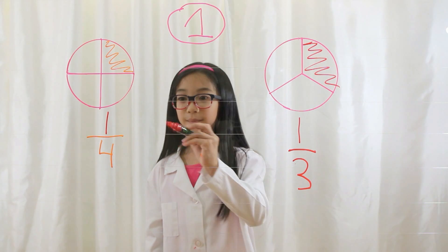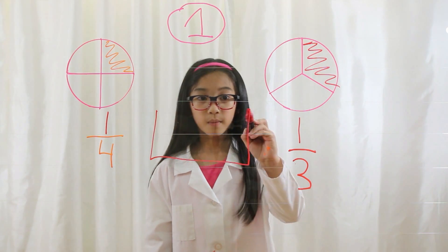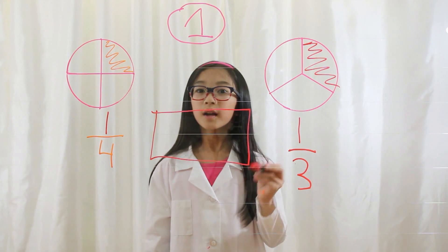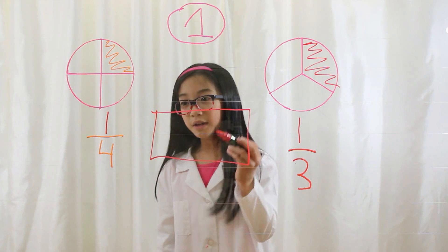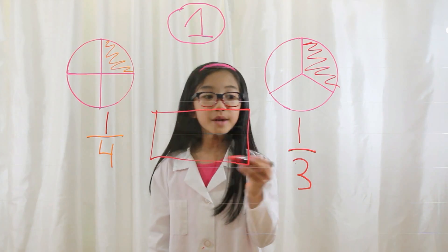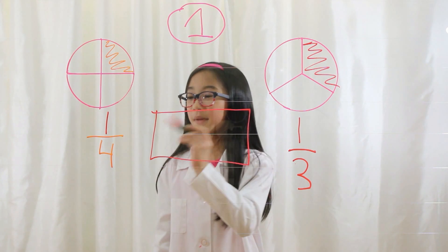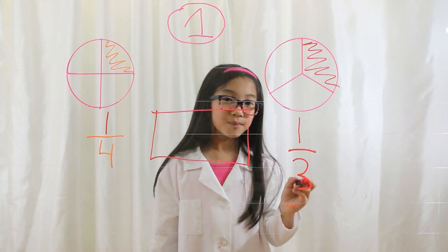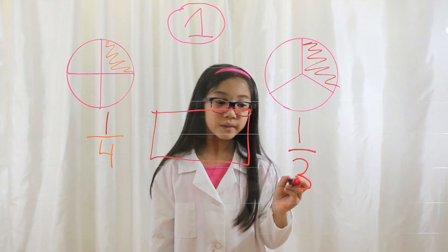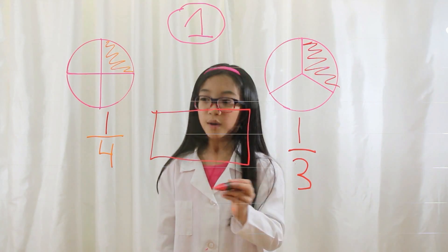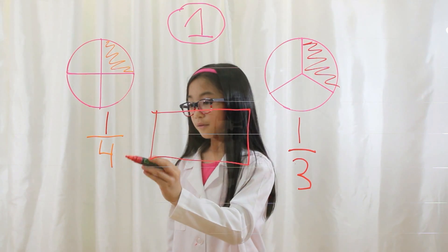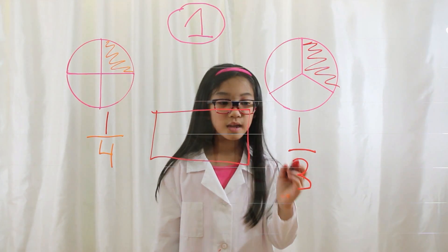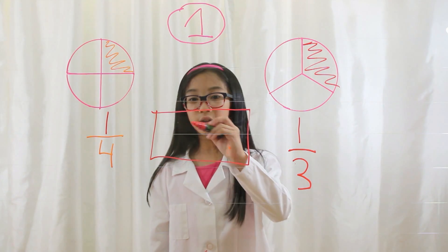You notice this piece is bigger than that piece? That's because you divided this more than this fraction. Let's compare them. Here's the trick: if the numerators are the same, you compare the bottom. The more pieces you divide it into, the smaller it is. The less pieces you divide it into, the bigger it is. So, you divide it into four pieces versus three pieces, so one-third is bigger.